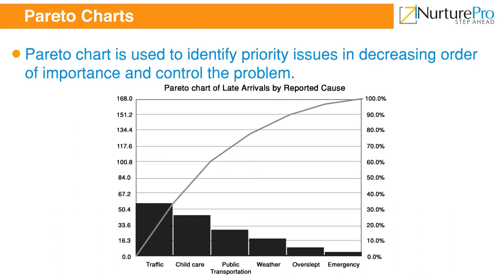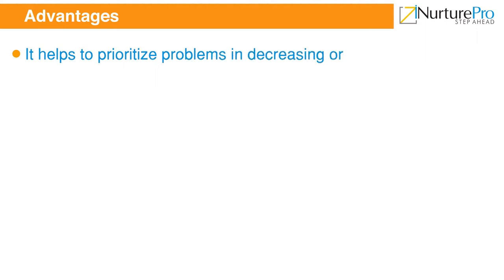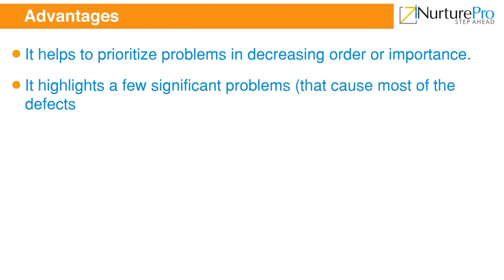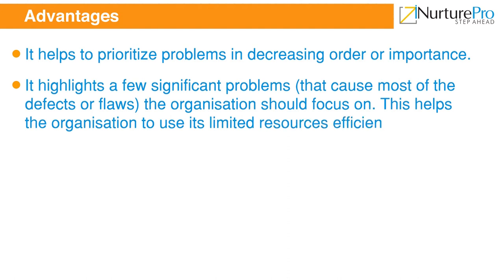The advantages of Pareto diagrams are: one, it helps to prioritize problems in decreasing order of importance; two, it highlights a few significant problems that cause most of the defects or flaws, allowing the organization to focus on them; three, this helps the organization use its limited resources effectively to improve quality.